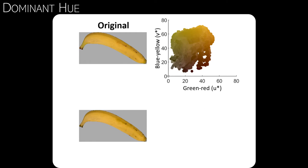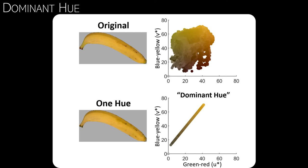We propose that we can reduce the color distribution to a dominant hue. This is illustrated by the image in the second row. The colors of the banana in the second row are manipulated.